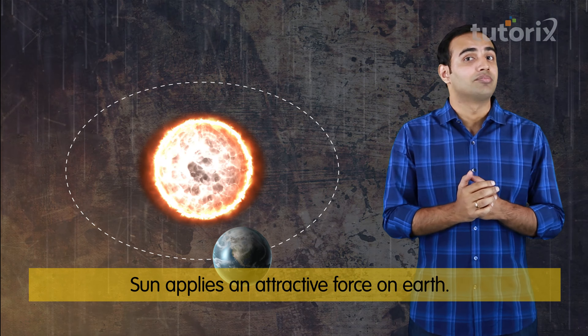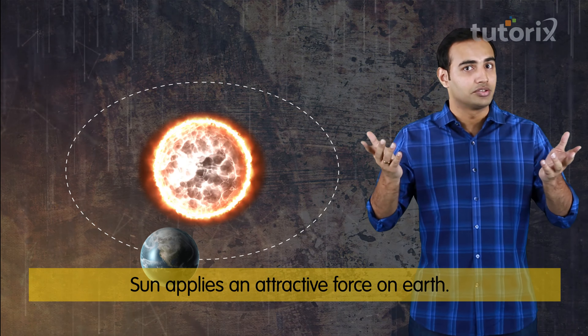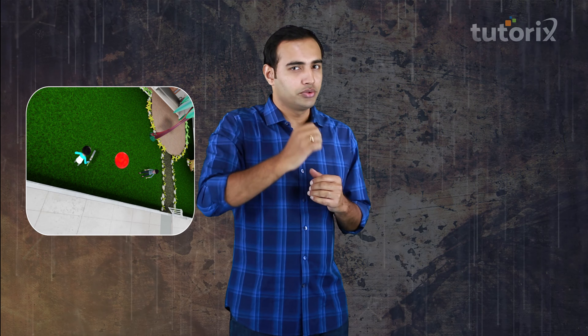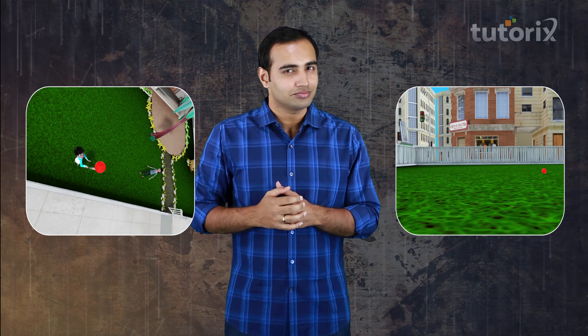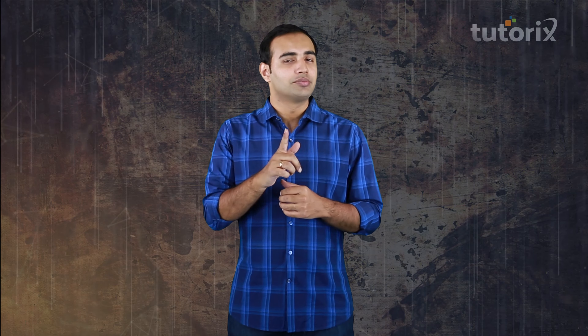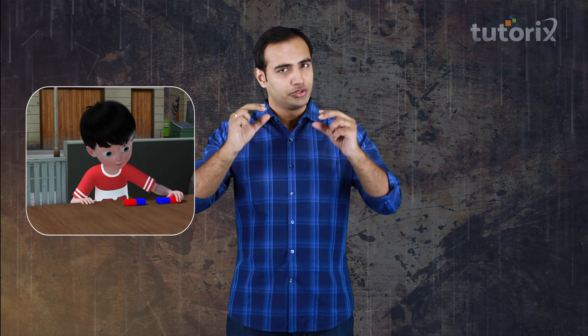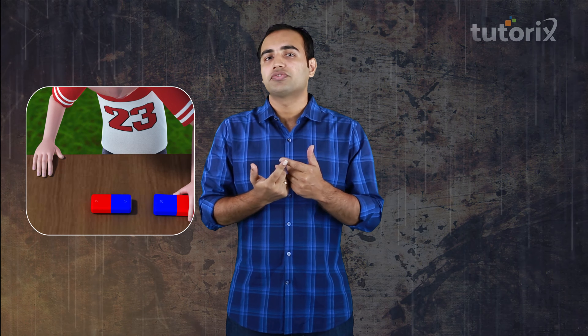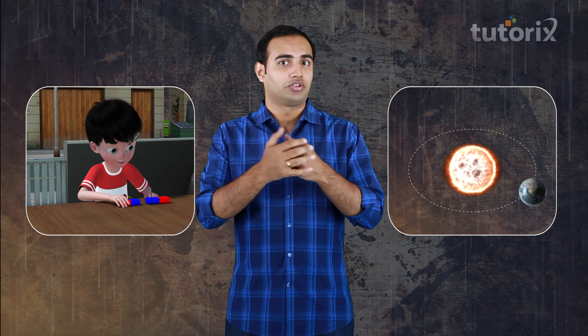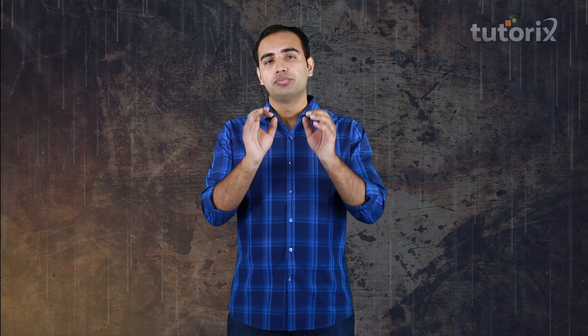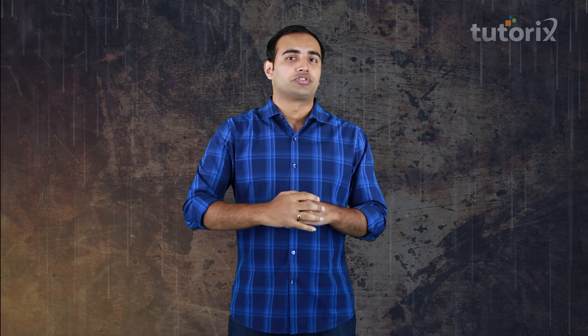We can't escape the sun as long as we are in the solar system. Looks like we got all the questions answered — but have we? Do you think the force that pulls objects back to earth is the same as the force which slows down a rolling ball? I don't think so. Similarly, do you think the force that acts between two magnets is the same as the force that acts between the sun and the earth? Again, that's not the case. So in the next video, let me tell you more about different types of forces.